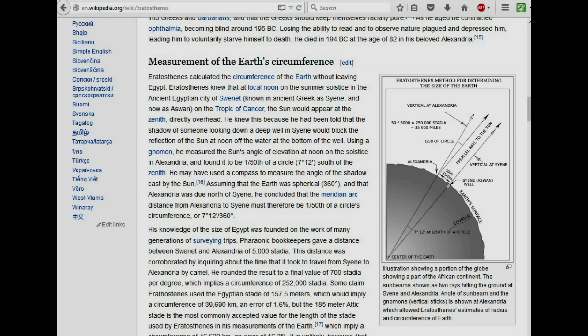He knew this because he had been told that the shadow of someone looking down a deep well in Syene would block the reflection of the sun at noon off the water at the bottom of the well. So using a simple stick, or a gnomon, he measured the sun's angle of elevation at noon on the solstice in Alexandria and found it to have an angle of seven degrees, which would work out roughly about one fiftieth.